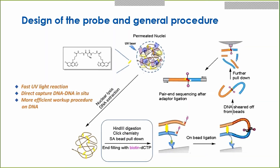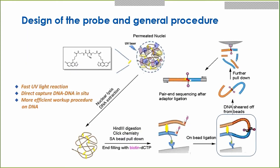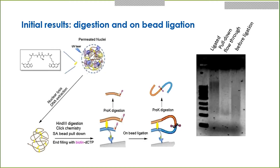Next, we sought to confirm the digestion and pull-down on the beads. Lane one shows the DNA of every condition before the bead pull-down; lane two shows the DNA eluted after the bead pull-down. When there is no probe, no UV, or no click chemistry, hardly any DNA can be pulled down on the beads. But when everything is present, the DNA is successfully pulled down. We then confirmed on-bead ligation by performing proteinase K digestion to elute the DNA from the beads before and after ligation, and the gel shows that DNA has been successfully ligated on the beads.